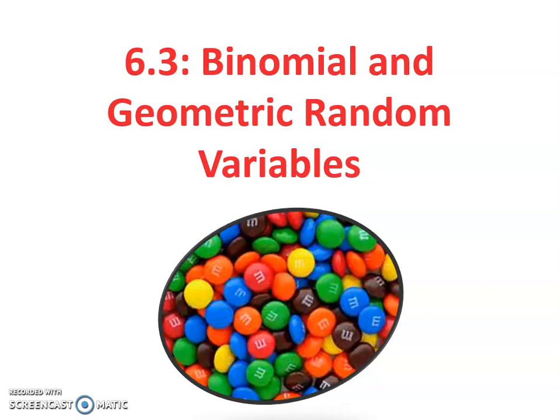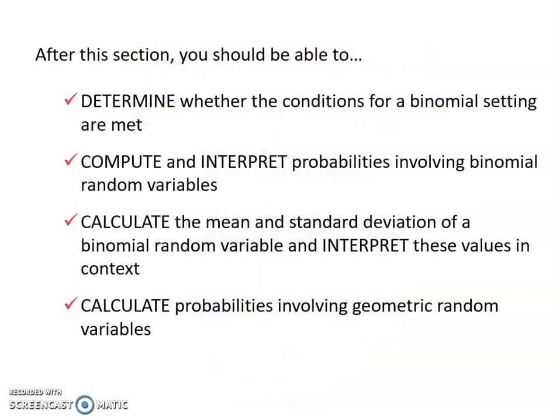Hey everyone, we're starting 6.3, our section on binomial and geometric random variables for AP Statistics. By the end of this section, you're going to be able to determine whether the conditions for a binomial setting are met, compute and interpret probabilities involving binomial random variables, calculate the mean and standard deviation of a binomial random variable and interpret these values in context, and also calculate probabilities involving geometric random variables.